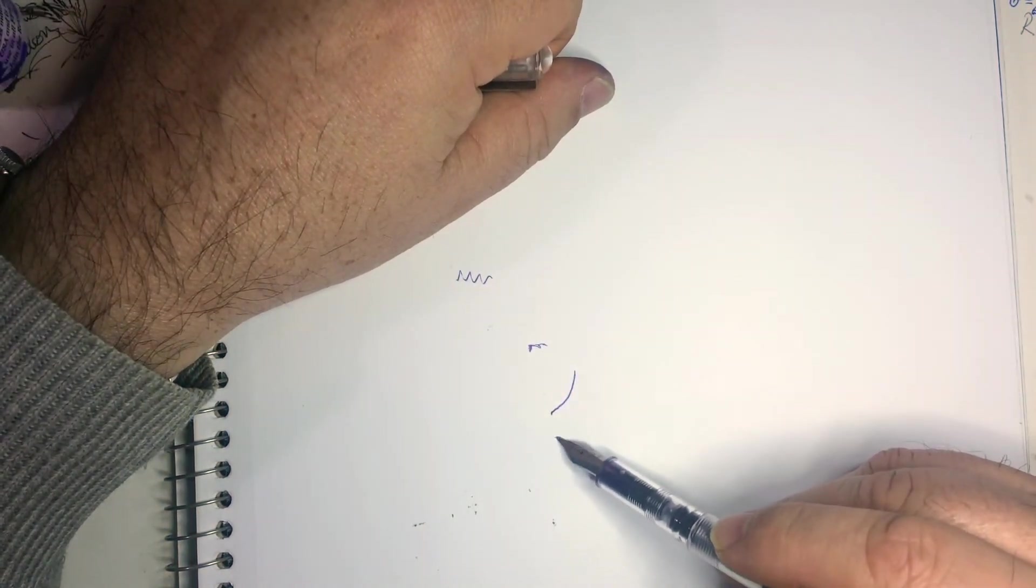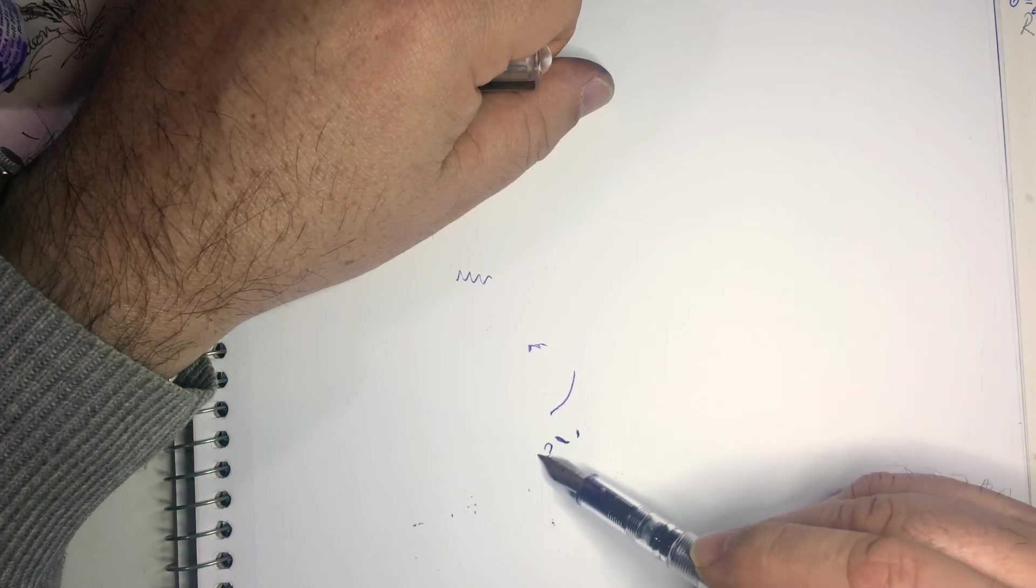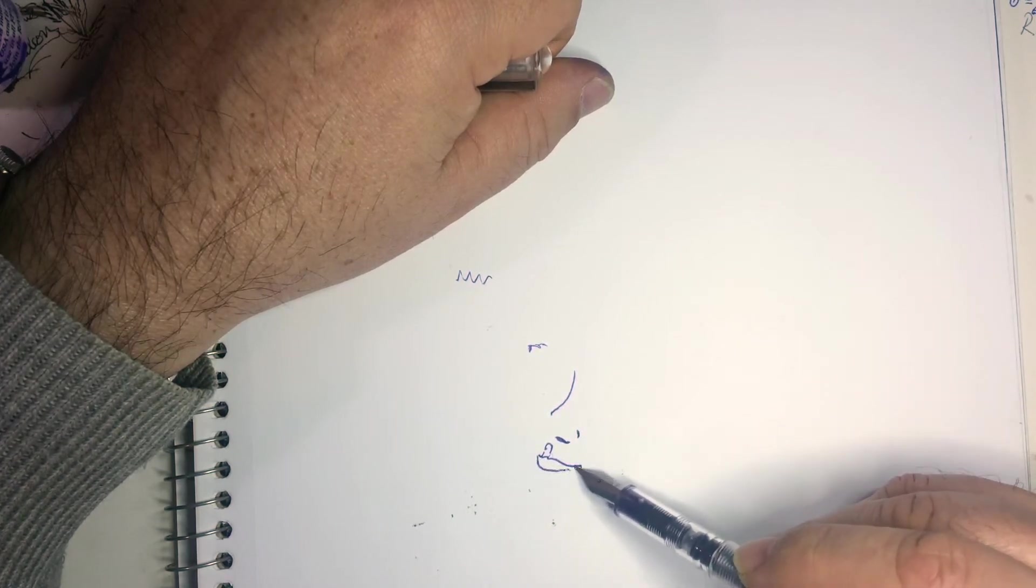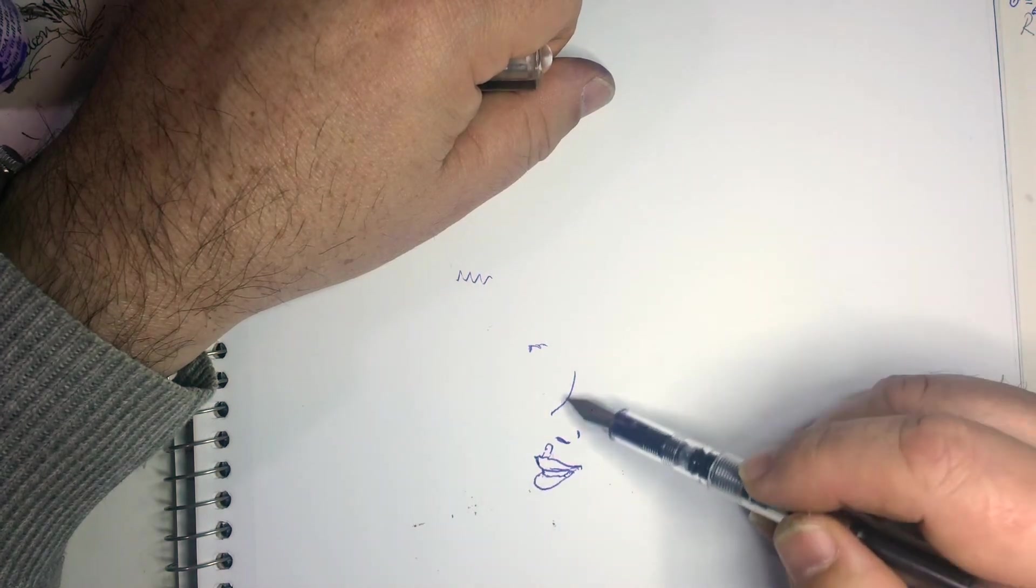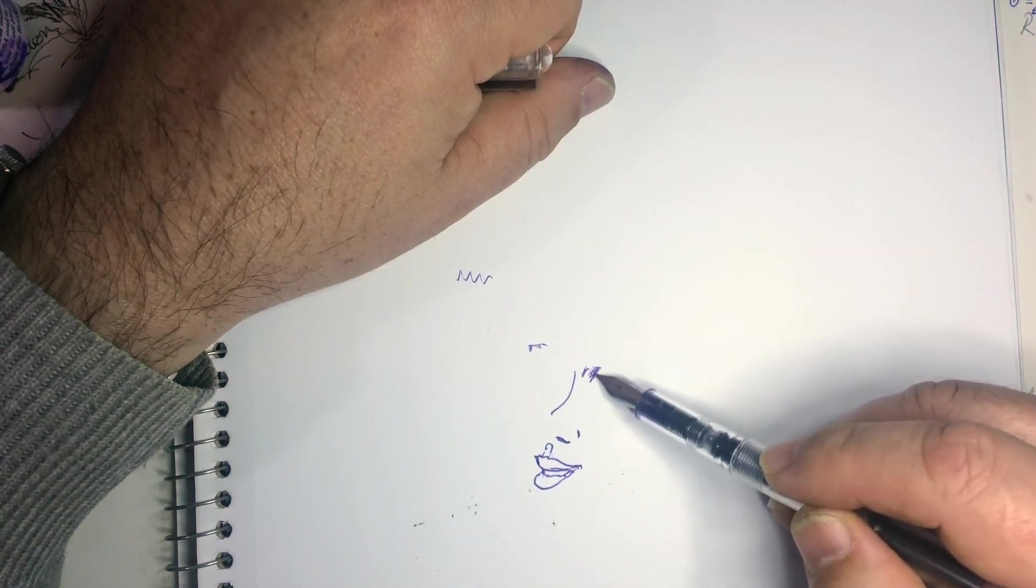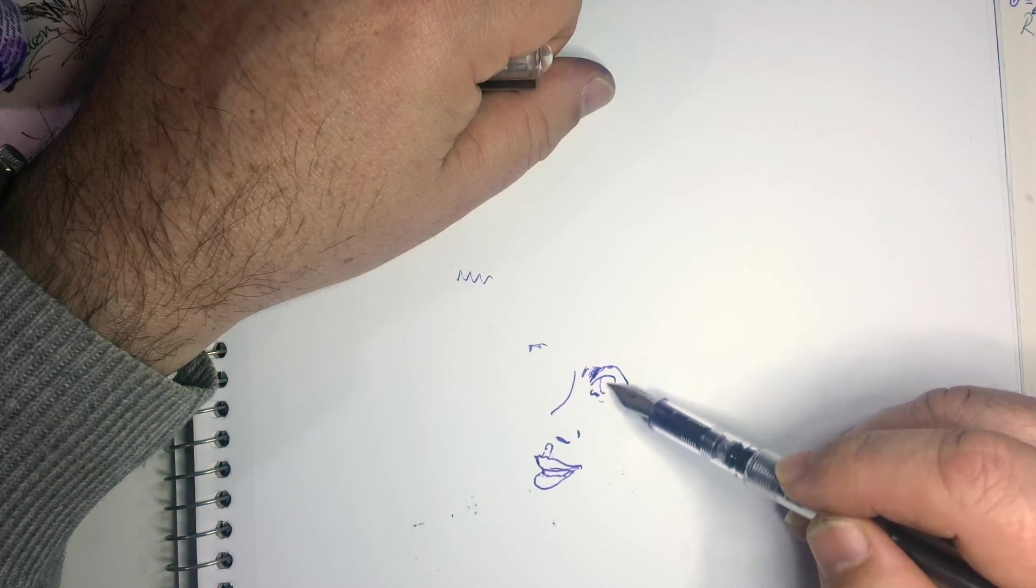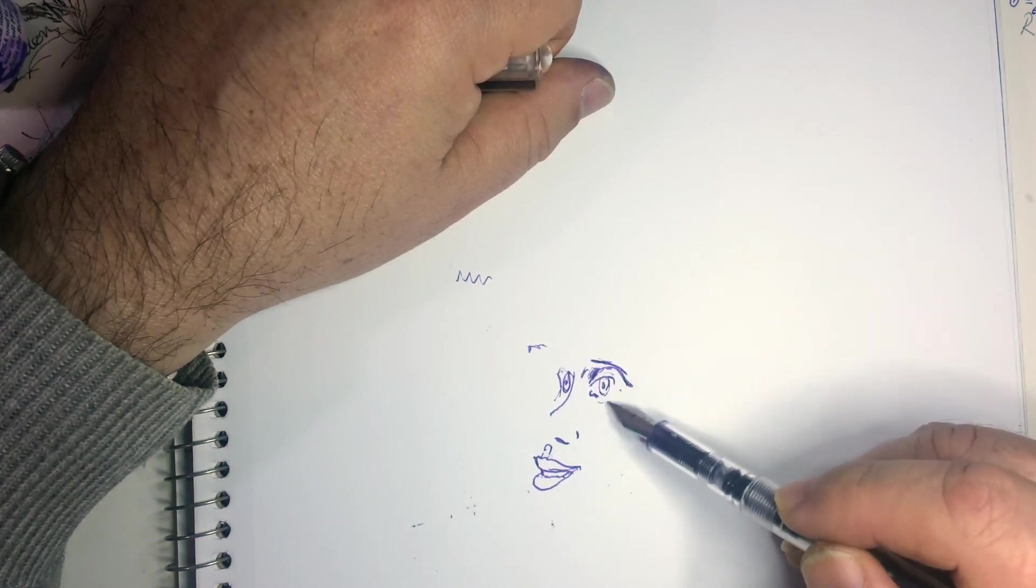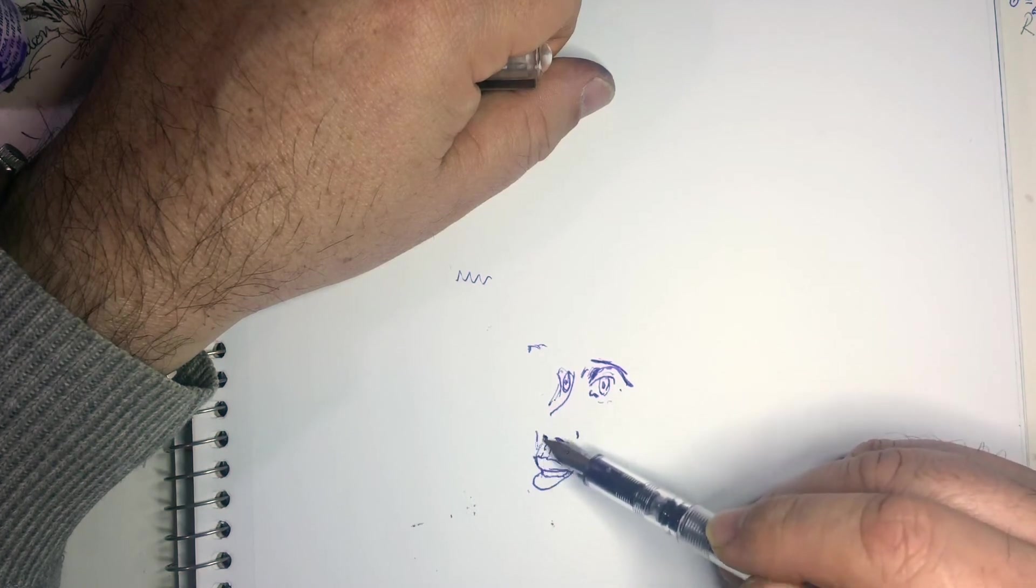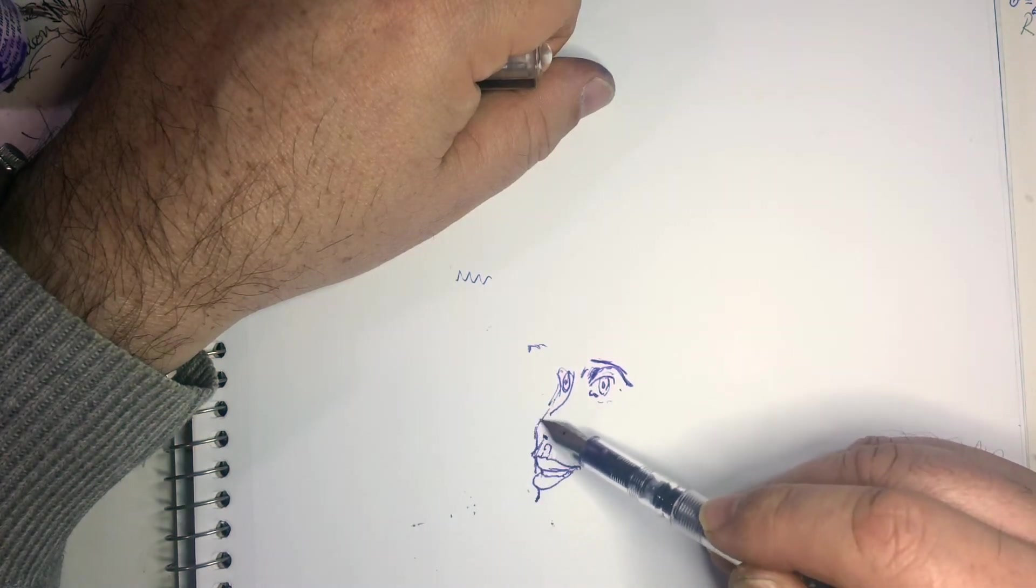And since I'm drawing with this Fountain Pen Revolution Mardi Gras ink, I may as well try to do something that, I don't know, looks a little Mardi Gras-esque. So how about a reveling college student on her spring break earning beads and listening to jazz out on the streets of New Orleans.